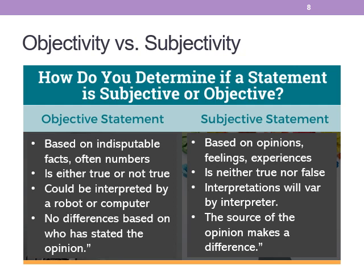In the case of subjective statements, interpretations will vary by whoever's making the interpretation — each of those blind men would have a different interpretation — and the source of the opinion would make a difference. If it's objective, instead of being based on opinions and feelings, it's going to be based on indisputable facts, often numerically quantifiable facts. If a statement is scientific, it's either going to be true or not true — not both — because we've taken out that individual lens of perception. It's so objective that a robot or a computer could even interpret the numbers. The interpreter wouldn't matter, and the interpretation will be the same. This is what we try for in science: objectivity.